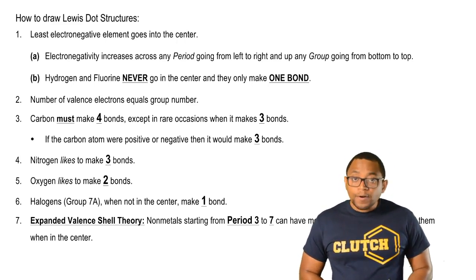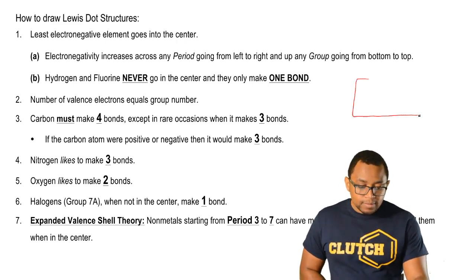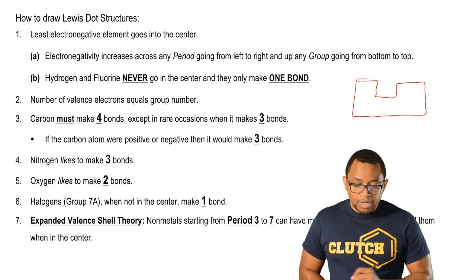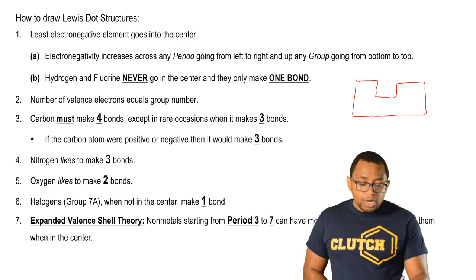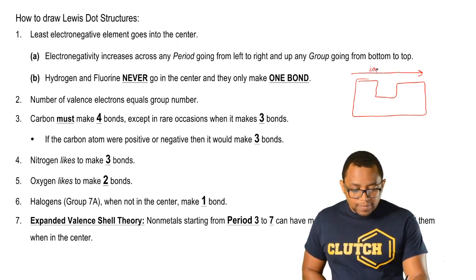The rules are, first, the least electronegative element goes in the center. Now remember, in terms of electronegativity, here's our periodic table. Electronegativity increases across any period or row going from left to right. As we go this way, electronegativity increases.